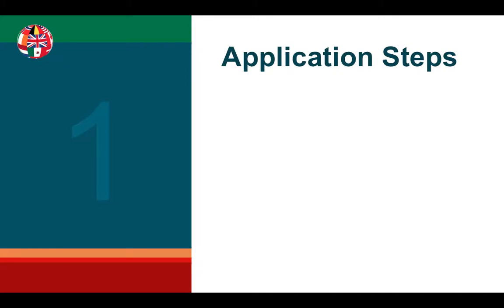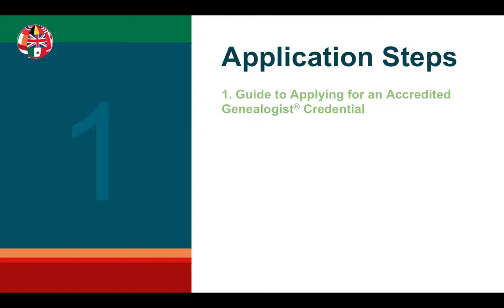Now I'd like to go over the application steps for Level 1. All of the items we will be discussing can be found online at the ICAPGen website. The first step is to read the Guide to Applying for an Accredited Genealogist Credential. This guide covers all of the ICAPGen requirements and guidelines for the accreditation process, and is very helpful to refer back to when preparing your four-generation project or studying for exams.